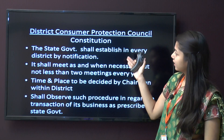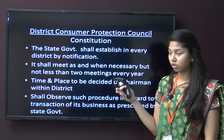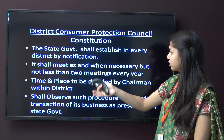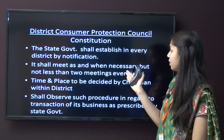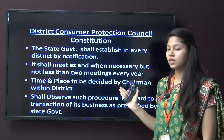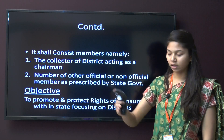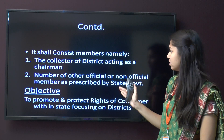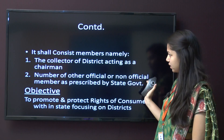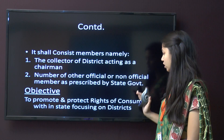The District Consumer Protection Council: the state government shall establish one in every district by notification. It shall meet as and when necessary, with time and place decided by the chairman. The procedure will be as prescribed in the act. It shall consist of the Collector of the district acting as chairman, and a number of other official or non-official members as prescribed by the state government. The objective is to promote and protect the rights of consumers within the district.